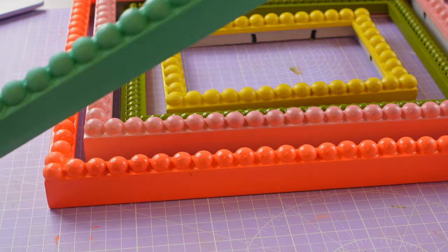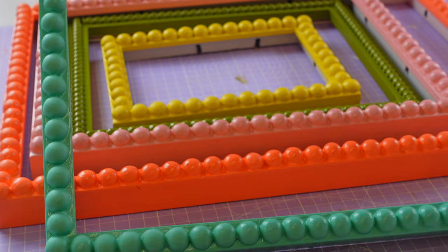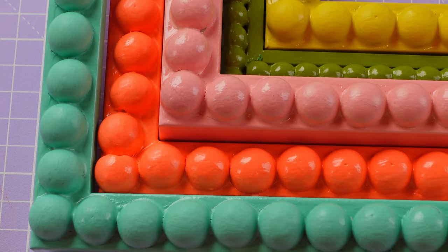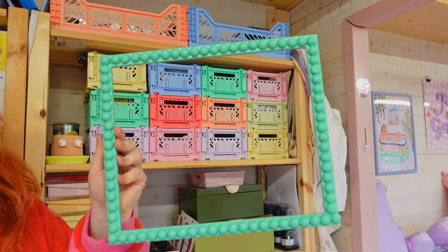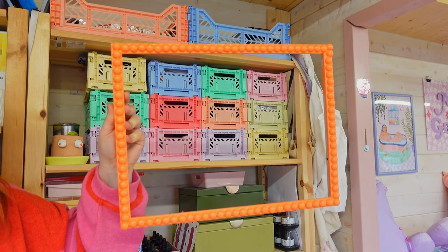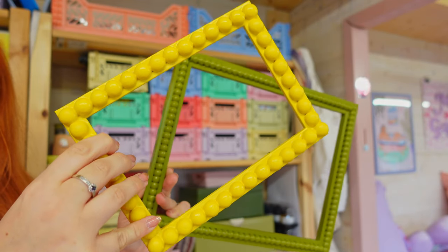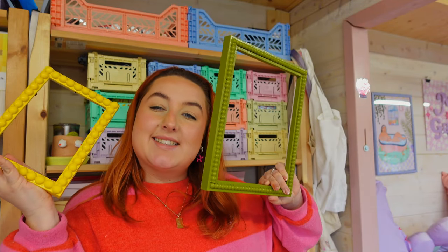Now the frames have dried, this is what they look like, they're super colourful and the gloss spray really makes those colours pop and they look so glossy and shiny, I am so happy with them. And now your last step is to just add the final artworks into your frames.